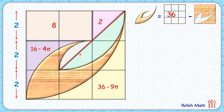Now let's calculate the area of this green region and gray region. For the gray region we consider the quadrant formed here and the triangle formed here. This green quadrant has a radius of 2 centimeters, so the green quadrant area is one-quarter times π r squared, which gives π.